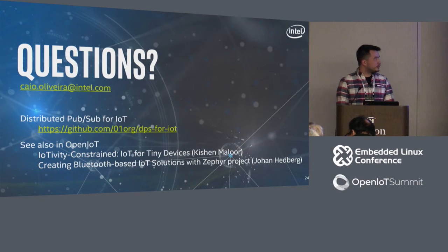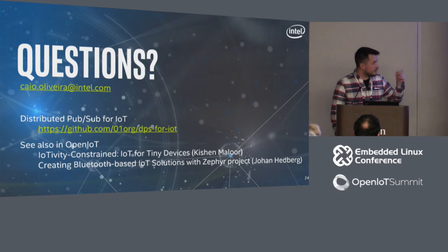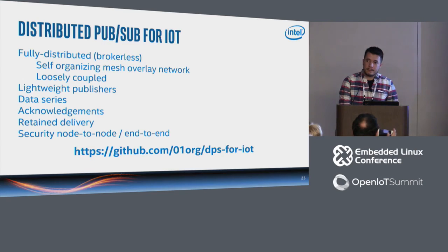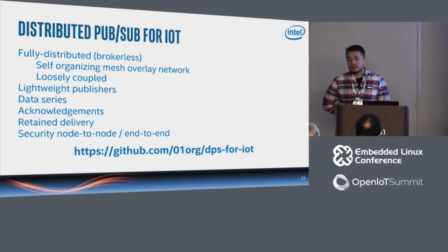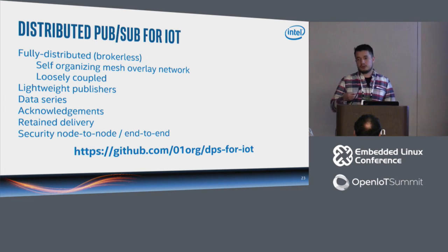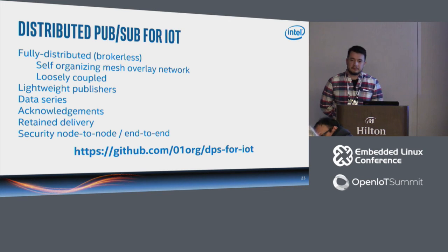That's it for today. If you have questions, please talk to me during the conference or send an email. Later today I recommend the kitchen talk. In response to a question: DPS is a pub-sub and shares many features with MQTT — you have topics, you can subscribe using wildcards. The difference is it doesn't rely on a central broker, so every node can act as a router for packages. It uses the same syntax as MQTT.